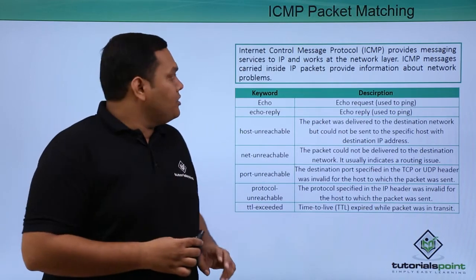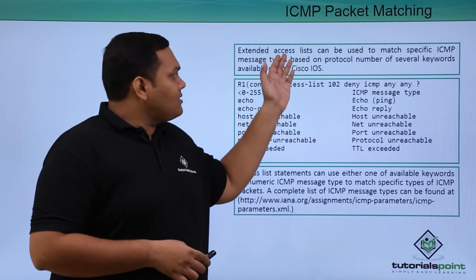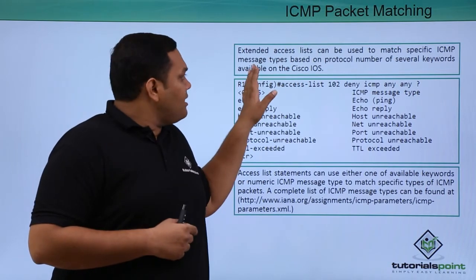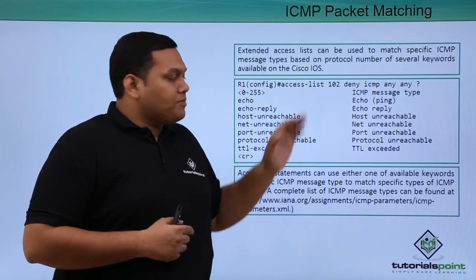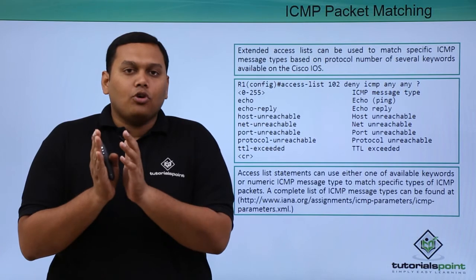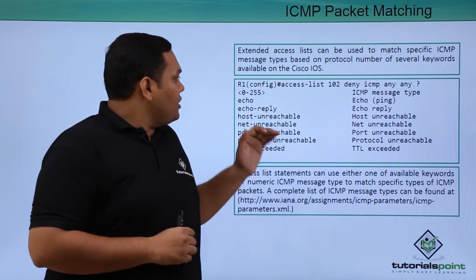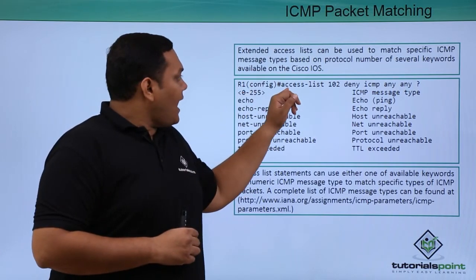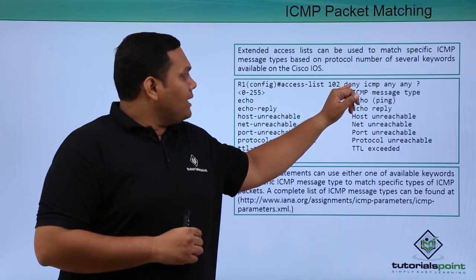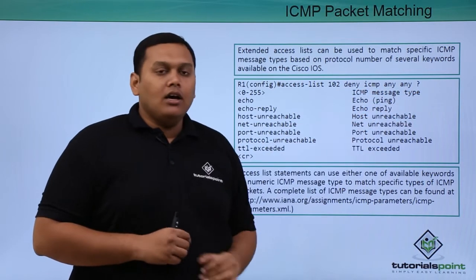To configure this, an extended access list can be used to match specific ICMP message types based on the protocol numbers. In configuration mode, entering 'access-list 102 deny icmp any ?' will show all available ICMP message types.